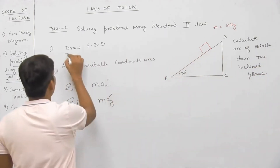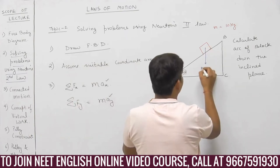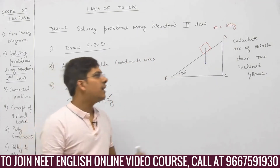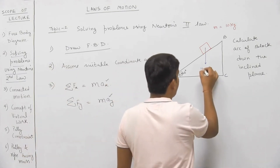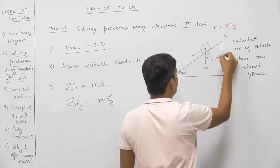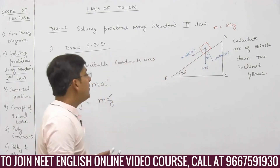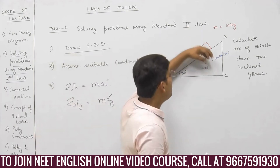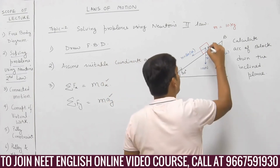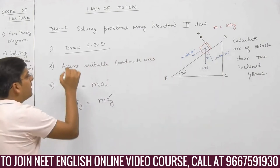First step: draw the free body diagram — all forces acting on the block. This is mg. Mass of the block is 10 kg, and I'll use g as 10 m/s², so weight is mg = 100 Newton. With the 30-degree angle, this component comes out to be 100·cos30 and this comes out to be 100·sin30. The block presses against the inclined plane with force 100·cos30, so the inclined plane applies a normal reaction N.